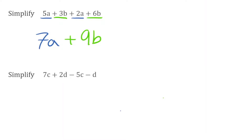For our next question, we're going to do exactly the same thing. We have 7c plus 2d minus 5c minus d. Let's look at our individual terms. For terms of c, we have 7c take away 5c. If I have 7 lots of c and I take away 5c, that gives me 2 lots of c. Now for terms of d, we have positive 2d and we're going to take away a term of d. So 2 lots of d take away a term of d leaves 1d. We don't write the 1, so we just write plus d.